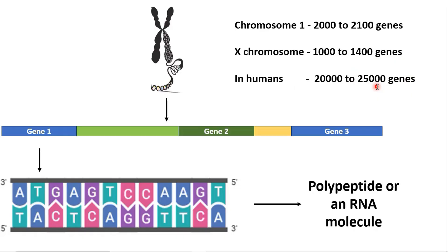Different chromosomes can have different number of genes. For instance, chromosome number one is having 2,000 to 2,200 genes and X chromosome is containing 1,000 to 1,400 genes.